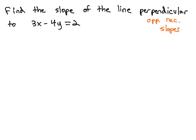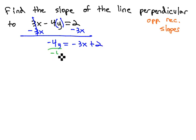So let's identify the slope of this equation by isolating the y. Subtract 3x from both sides to give us negative 4y equals negative 3x plus 2. And finally, dividing each term by negative 4. This gives us y equals 3 fourths x minus 1 half.